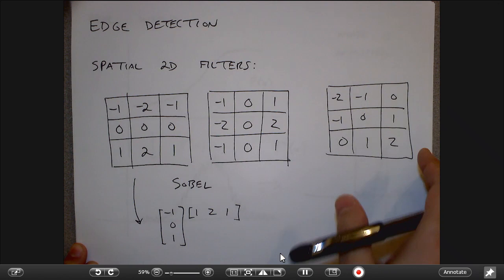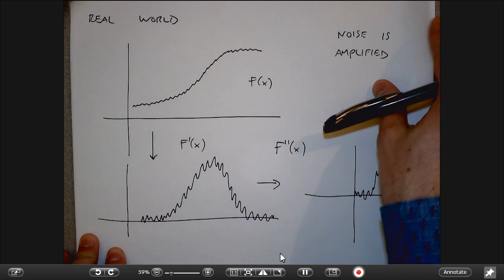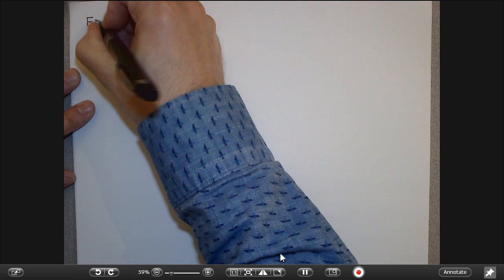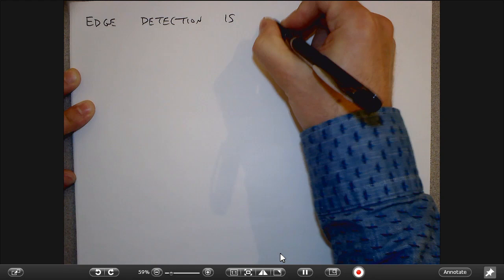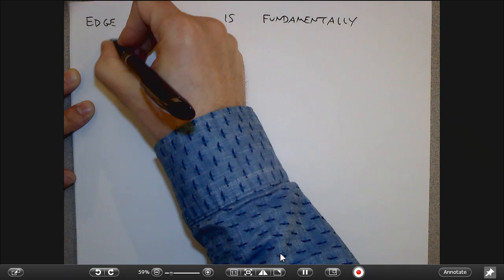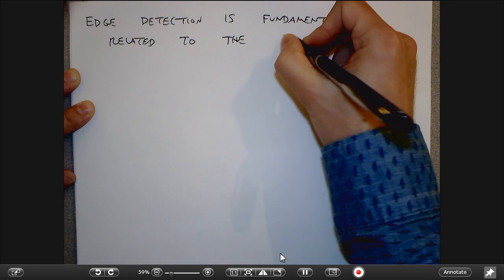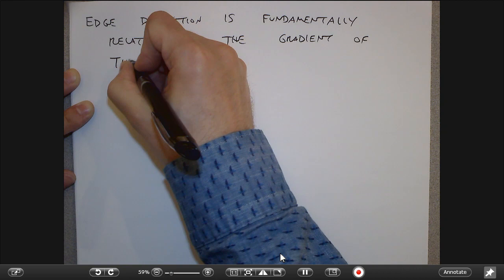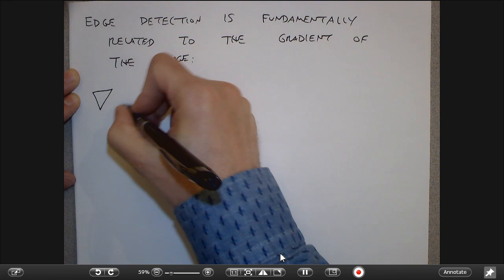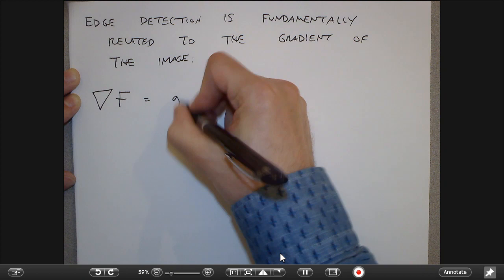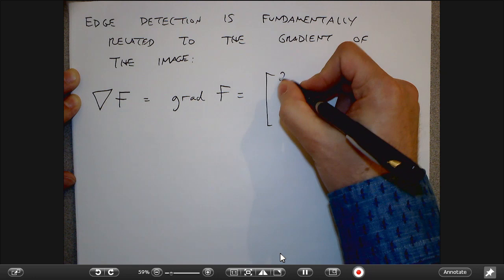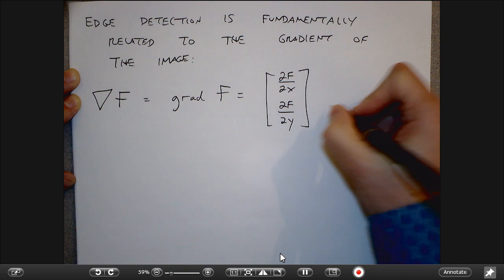Edge detection is fundamentally related to the gradient of an image. The gradient is simply the x and y partial derivatives placed in a vector—sometimes written as del-f or grad-f, and we may call these gx and gy. Since these are successive linear operators, smoothing and differencing can be applied in any order: we can think of this as smoothing the image first and then finding edges.